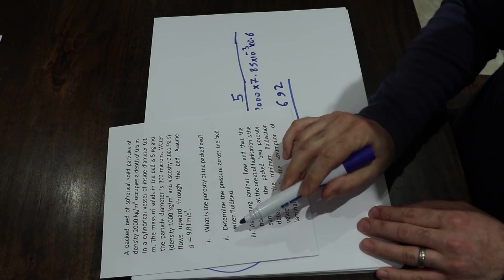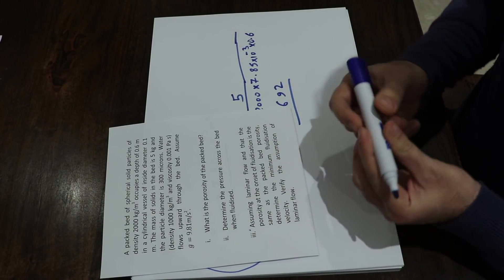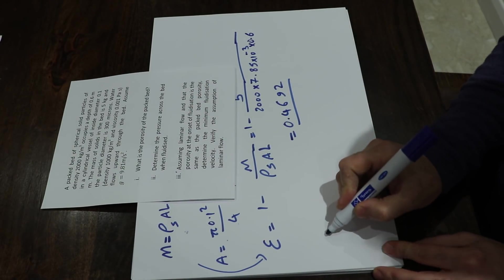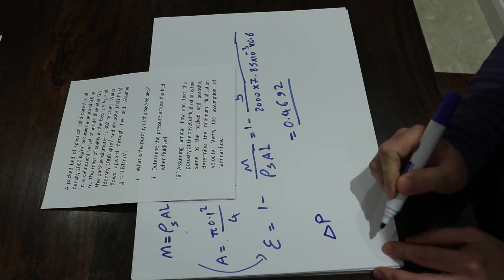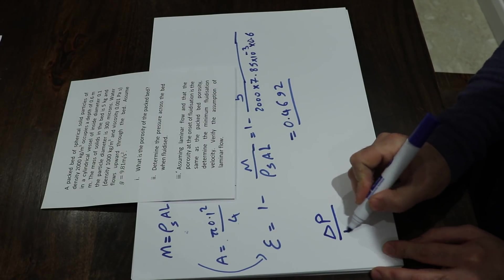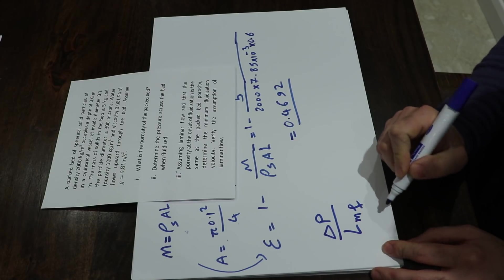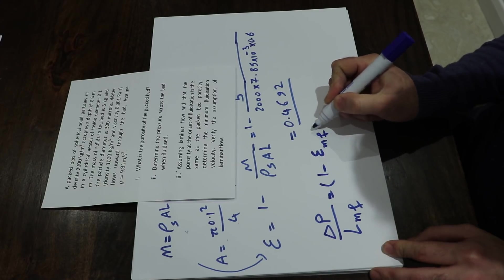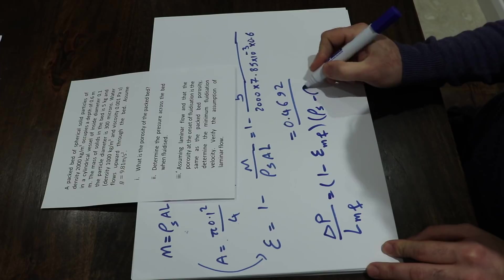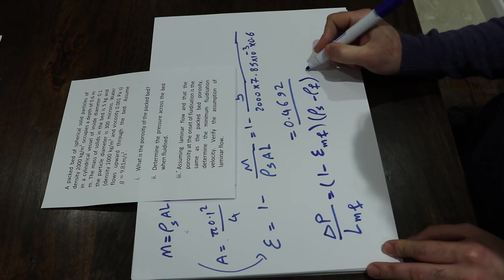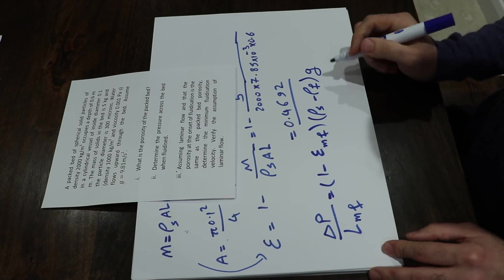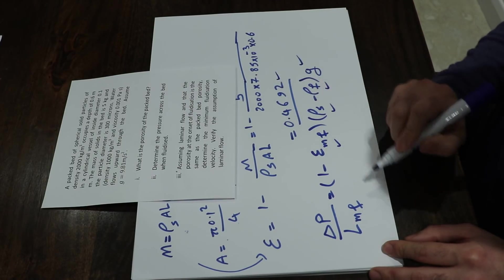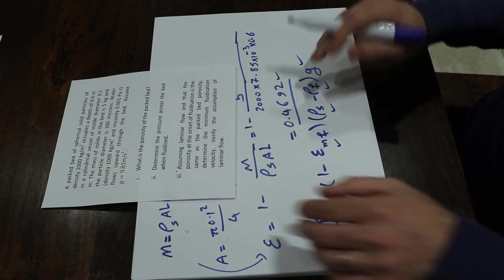The second part is to determine the pressure drop across the bed when fluidized. The equation at fluidization conditions is: ΔP / L_mf = (1 − ε_mf) × (ρ_s − ρ_f) × g. All parameters are available: ρ_s, ρ_f, g, ε_mf just calculated (0.4692), and L_mf, so we can calculate ΔP directly.